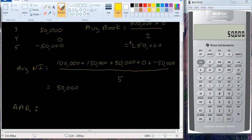Is going to be equal to 50,000 divided by 250,000, so we'll take that 50,000, and we'll divide it by 250,000, and we get .20, or 20 percent.